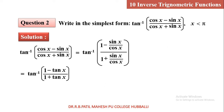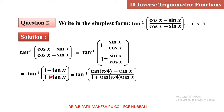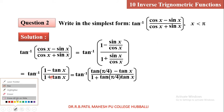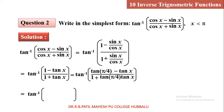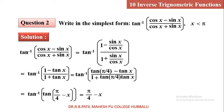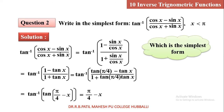By the trigonometric results, write tan inverse of (tan(π/4) minus tan x) upon (1 plus tan(π/4) times tan x). This is from the compound angle formula — tan(a minus b) formula — giving tan inverse of tan(π/4 minus x). Tan inverse and tan get removed, so the final simplest form is π/4 minus x.